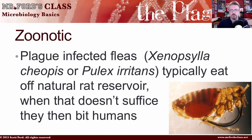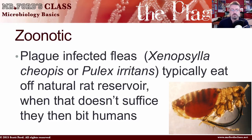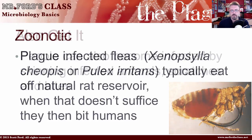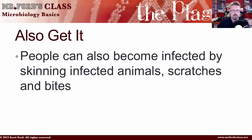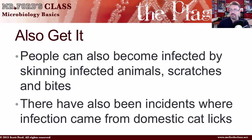Fleas typically feed off the natural rat reservoir, and when that's insufficient, they jump to something else — us humans — and take a bite. You can also get the plague through other means. For example, if you skin an infected animal, you can get the plague. Scratches and bites can transmit it as well. There have even been cases of people getting the plague from a domestic cat lick.